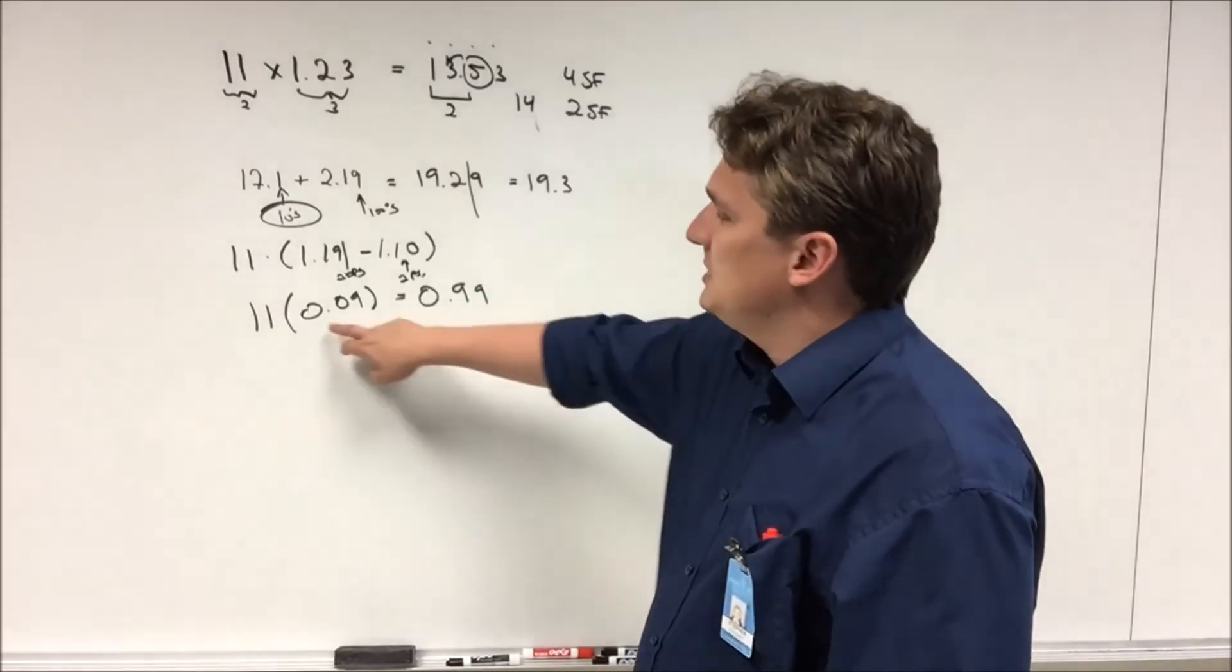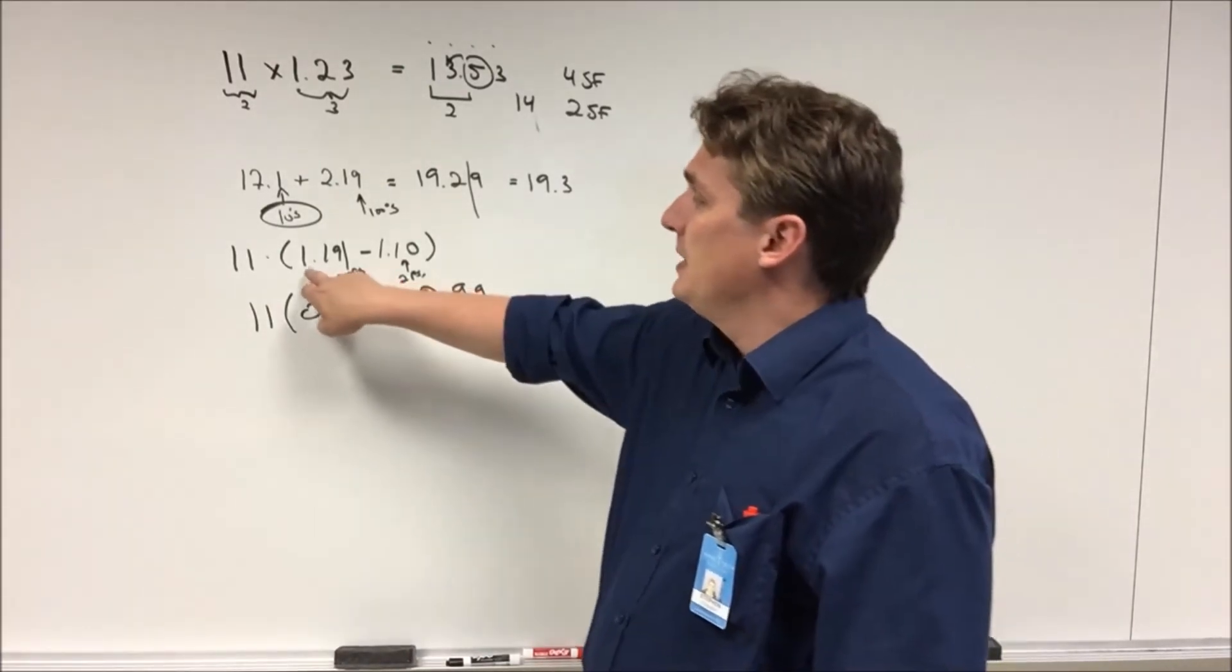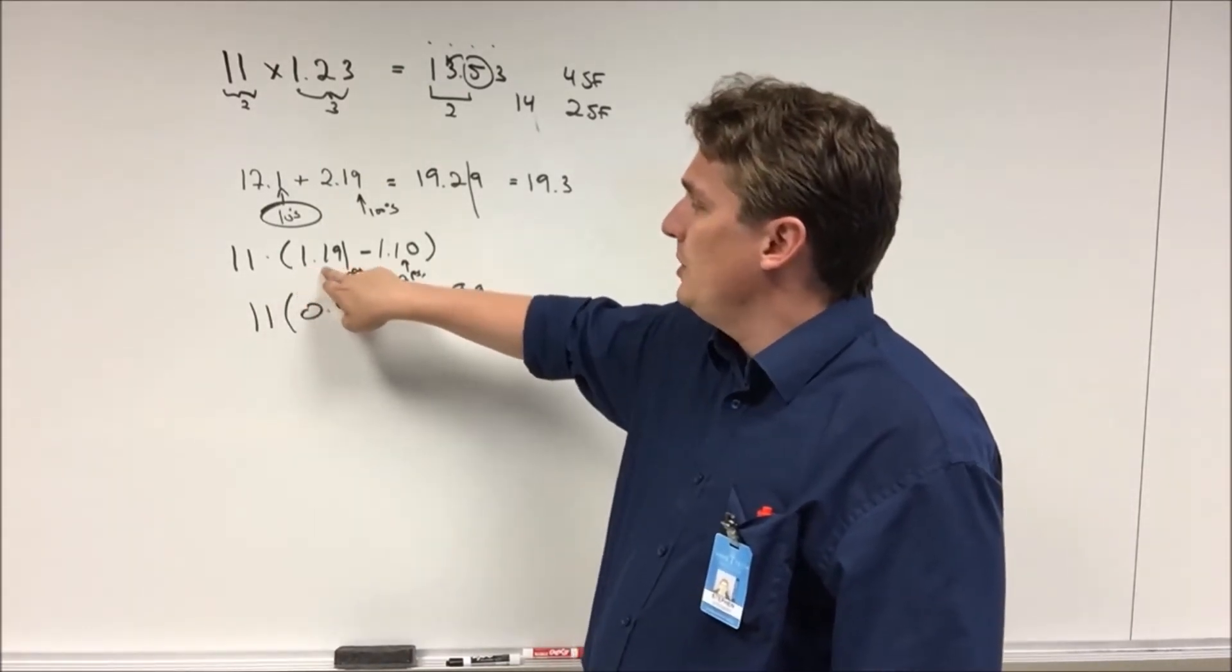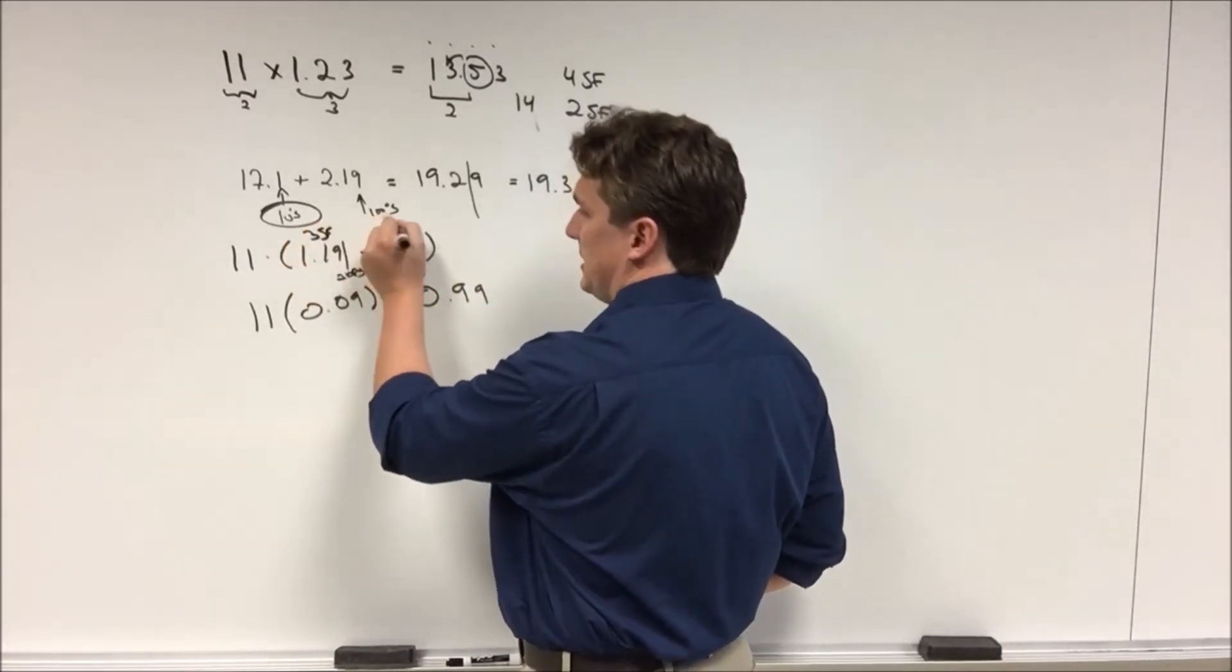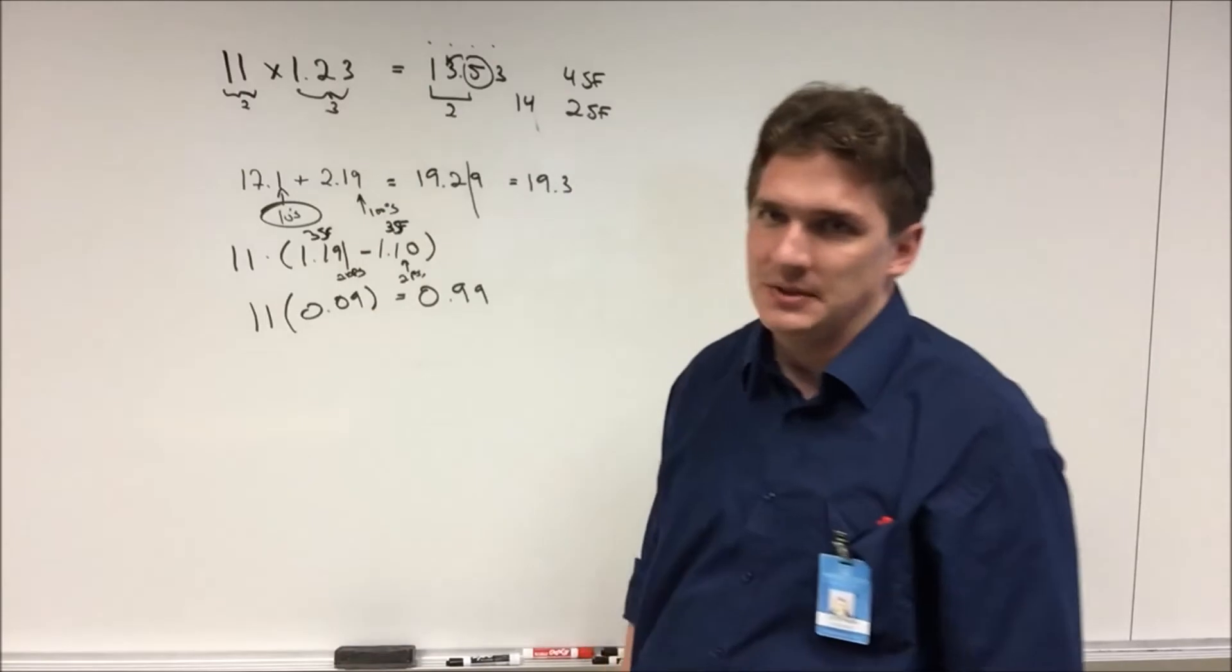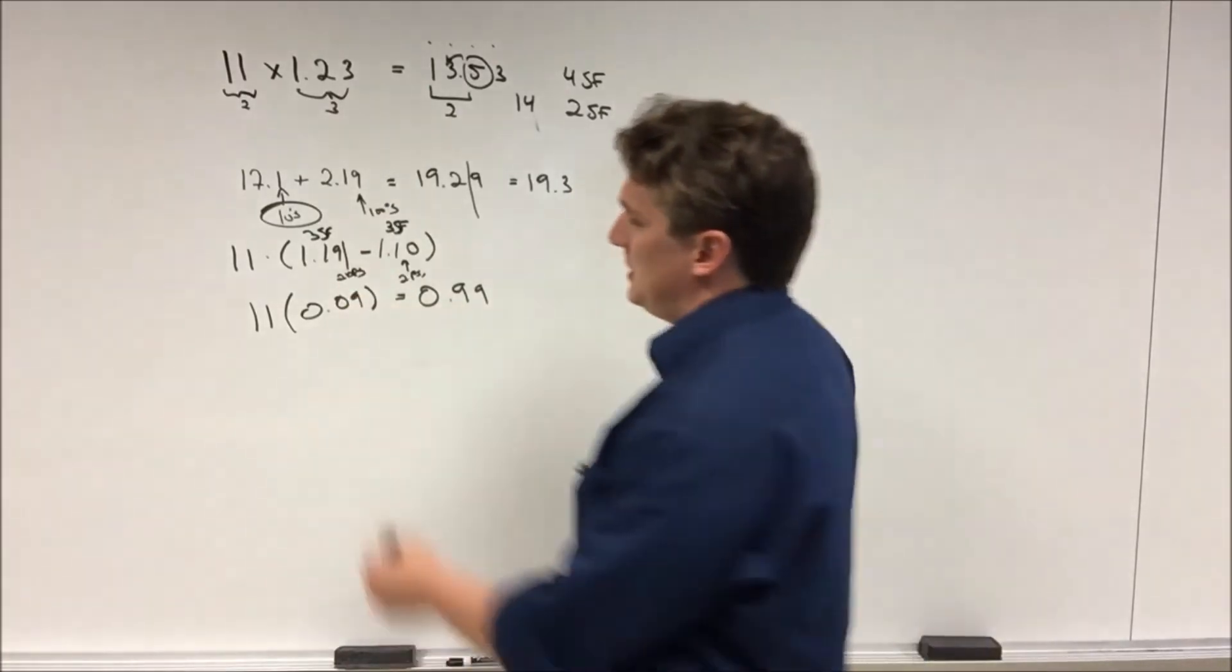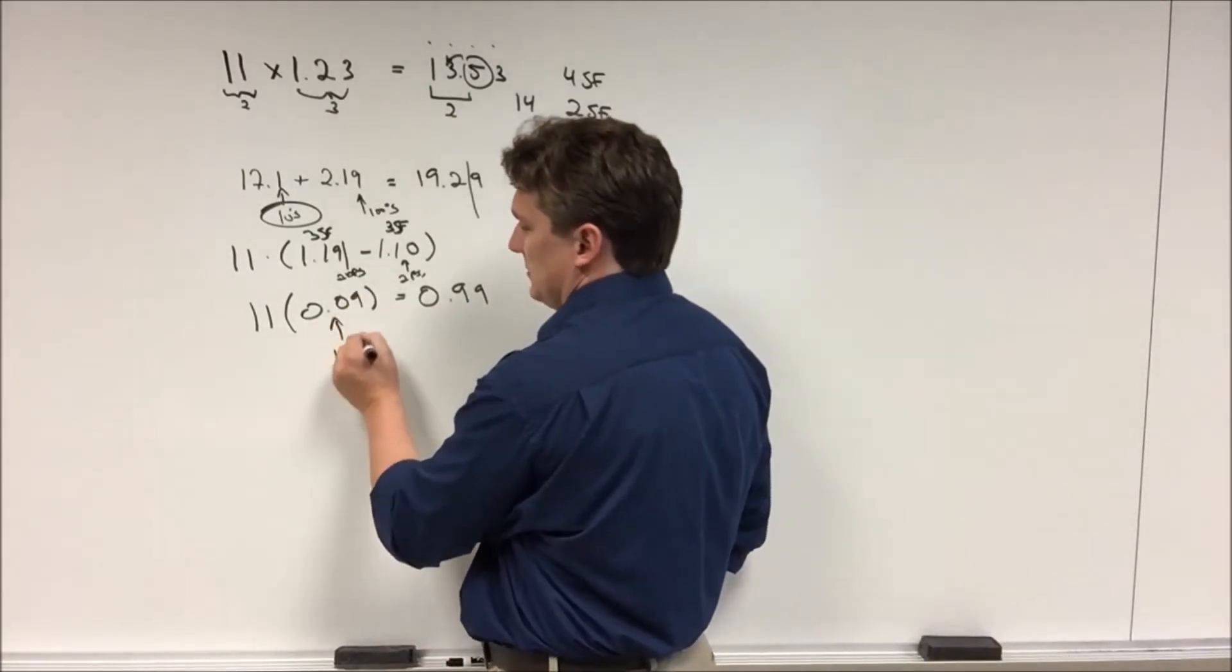When we take the difference we end up with 0.09. Well this number here, 1.19, has three sig figs and this has three sig figs. Now when we take the difference we end up with one sig fig.